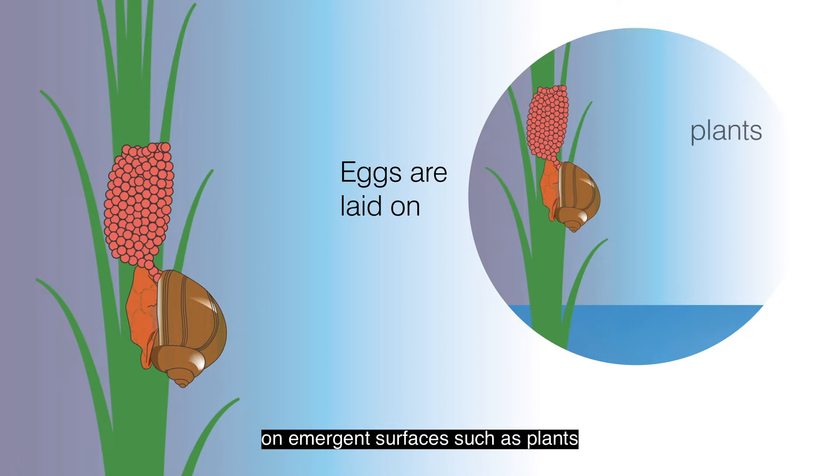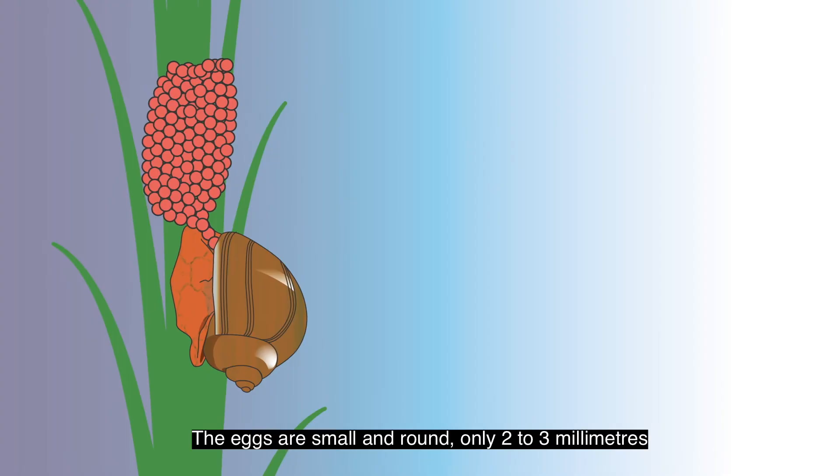The eggs are laid just above the water line on emergent surfaces, such as plants or structures like rocks, logs or walls.